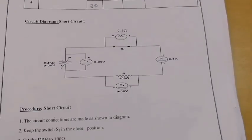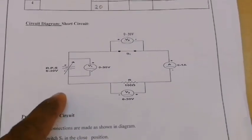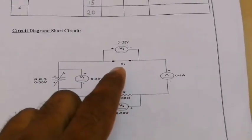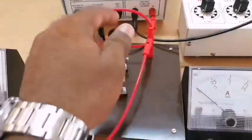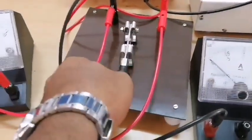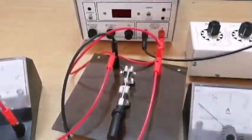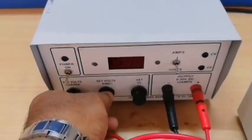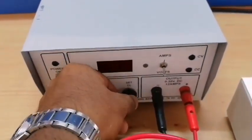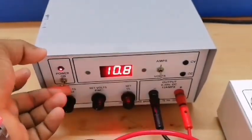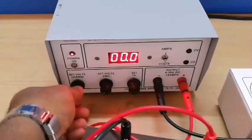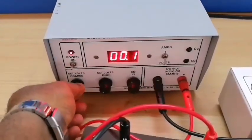For the short circuit test, the circuit remains the same as for the open circuit test — we just need to close the switch. Before switching on the supply, the voltage should be at 0 position and current at maximum. Then switch on the supply and vary the voltage to 5 volts.